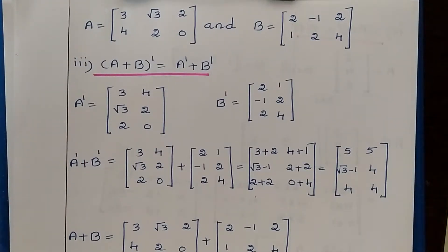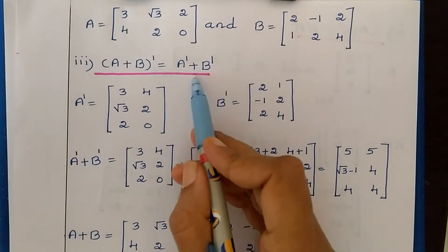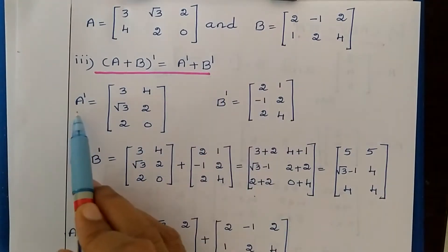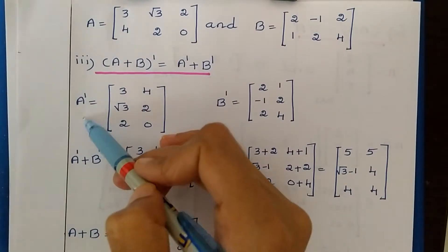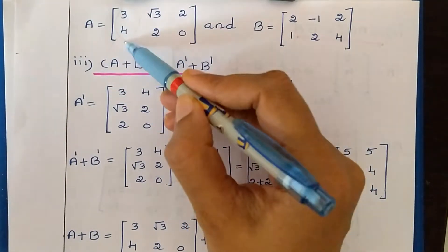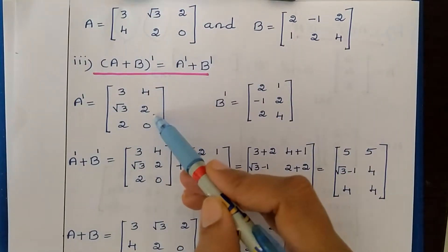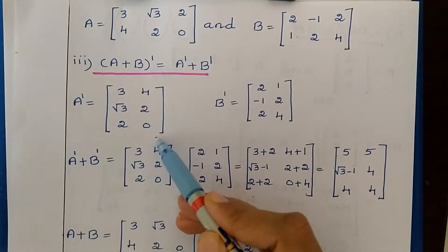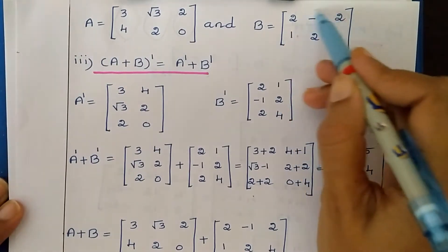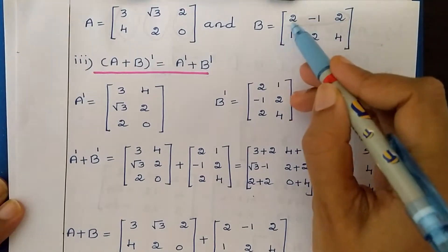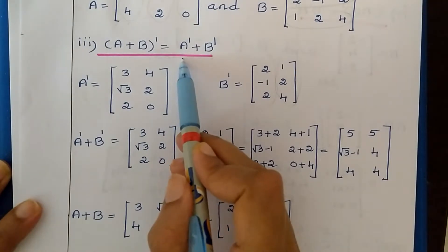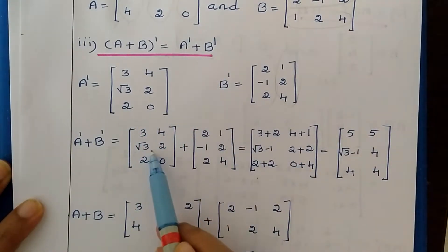Next is the third property: (A+B) transpose equals A transpose plus B transpose. I have taken A and B matrices. First find A transpose by taking each column as a row: first column gives row 3, 4; second column gives √3, 2; third column gives 2, 0. Then find B transpose by taking each row and writing it as a column: first row becomes first column, second row becomes second column.